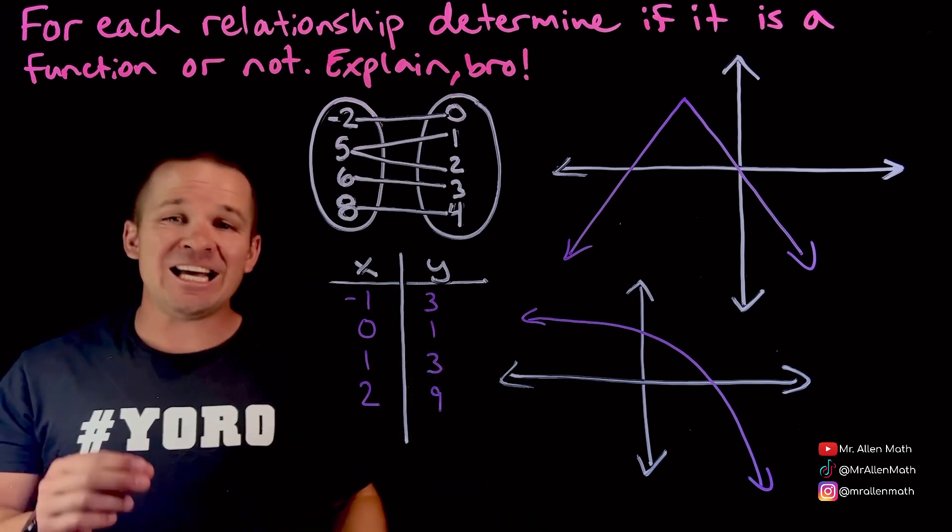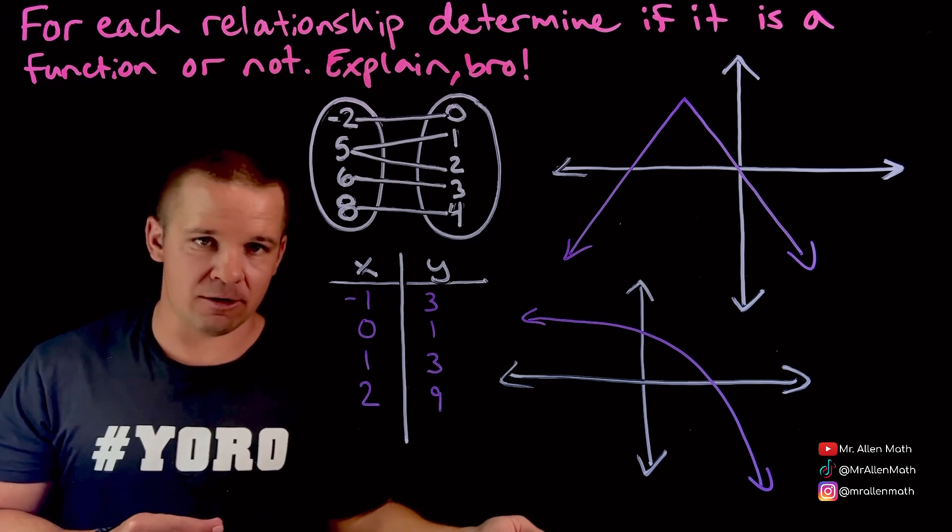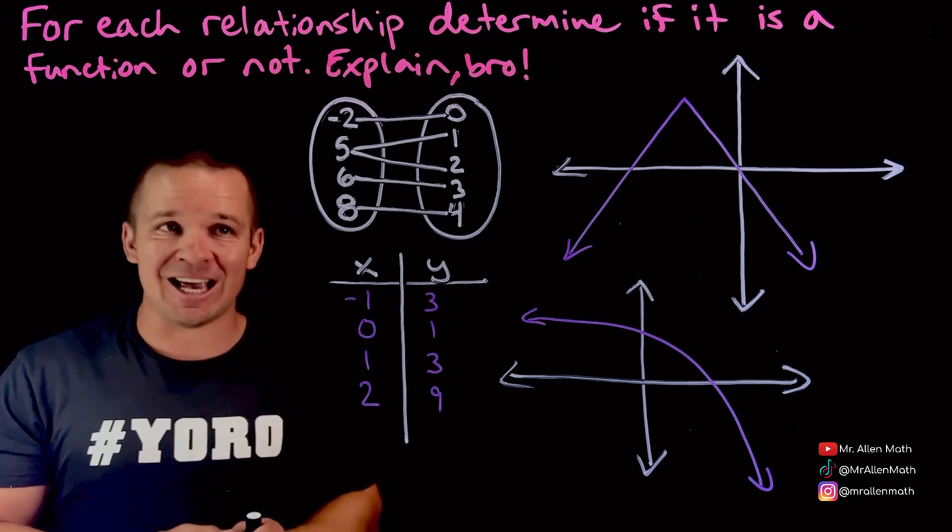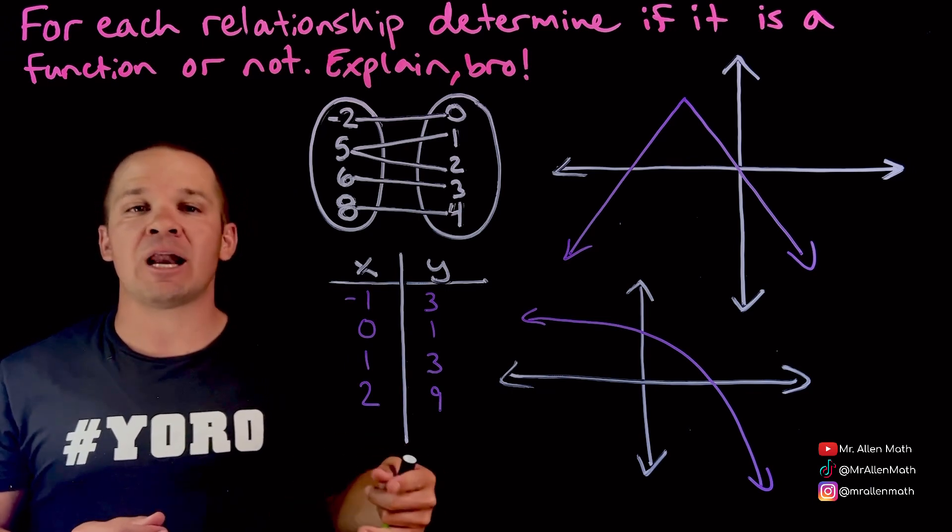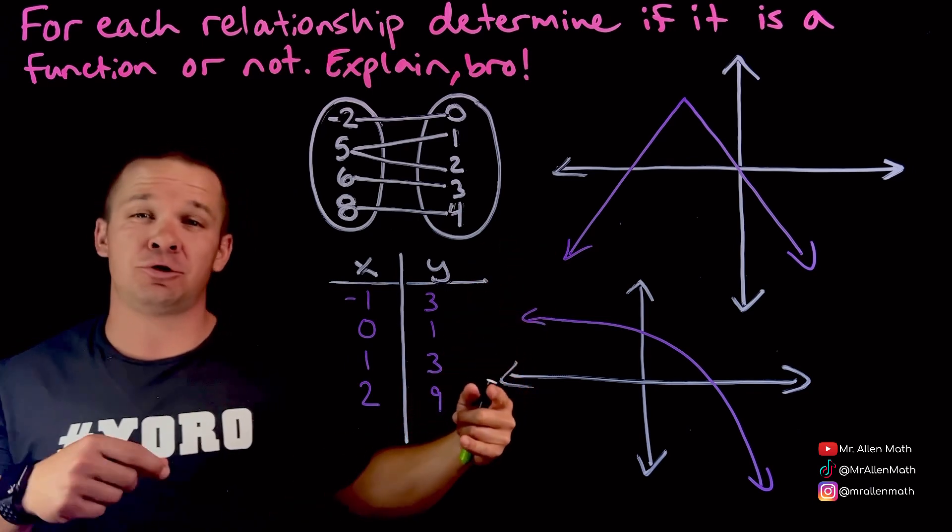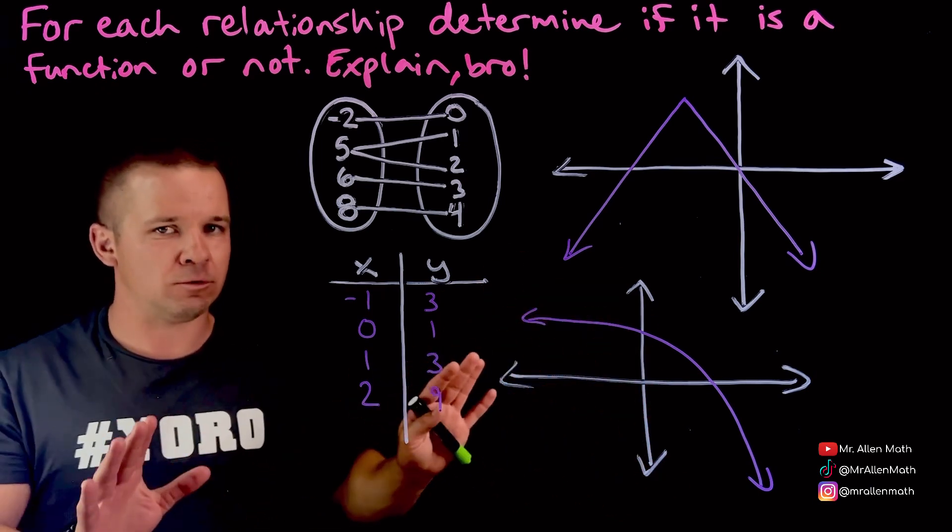All right, so in order to be a function, each input needs to have exactly one output. So if I plug an X in, I shouldn't get more than one Y value. That doesn't mean that the same Y value can exist for two different X values. It's just for each input, I get exactly one output.